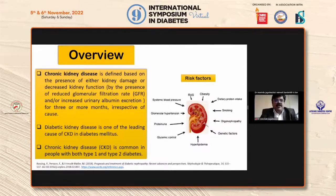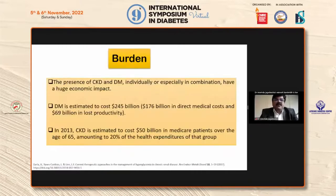Chronic kidney disease is common in people with both type 1 and type 2 diabetes. On the right side of the slide, you can see the various risk factors: RAS, obesity, dietary protein intake, smoking, oligonephropathy, genetic factors, hyperlipidemia, glycemic control, proteinuria, glomerular hypertension, and systemic blood pressure.